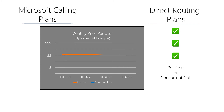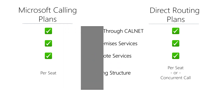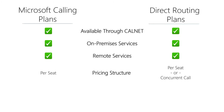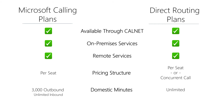The per-user cost is usually constant in a per-seat pricing structure. However, concurrent call price models typically scale for organizations with more users. Another difference between Microsoft's calling plans and direct routing plans is the minutes. Direct routing plans include unlimited inbound and outbound minutes, whereas Microsoft's calling plans include unlimited inbound minutes but are currently limited to 3,000 outbound minutes per user. Note that while outbound minutes on Microsoft's calling plans are ordered per user, they're shared across the organization.